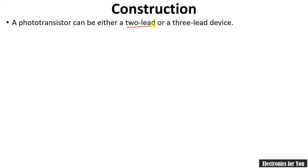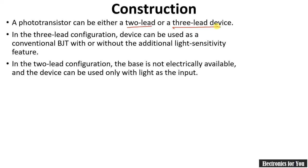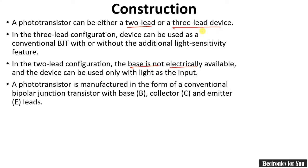Now let's see the construction of a photo transistor. A photo transistor can either have two leads or three leads. In a two-lead configuration, the base terminal is not present, whereas a three-lead device has all three terminals: base, emitter, and collector.